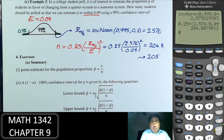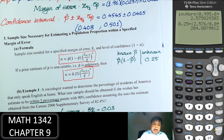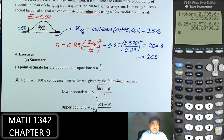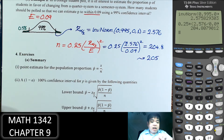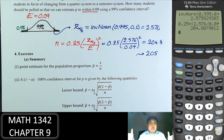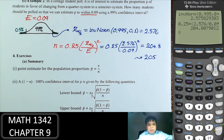Note that in the previous example we needed 437 people for 90% confidence, but here with even higher 99% confidence we only need 205. The reason is the margin of error: in this problem the margin of error (0.09) is much larger than the previous (0.03). So the smaller the margin of error, the more people you have to ask. Multiple factors determine the sample size.